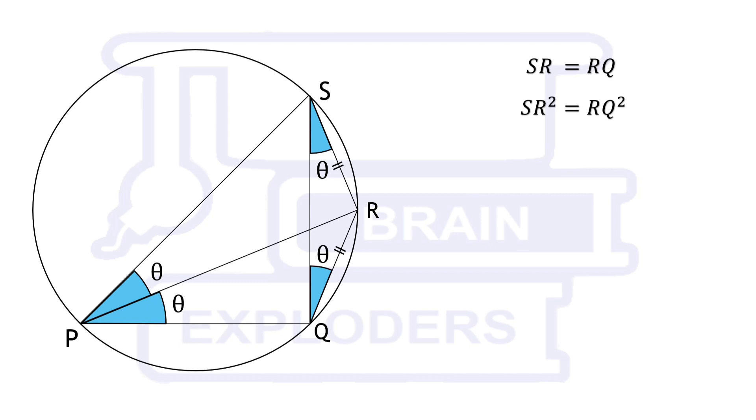It implies that SR squared is also equal to RQ squared. If SP is equal to b, PQ is equal to c, and PR is equal to a, then SR squared can be written as b squared plus a squared minus 2ab cos theta. And RQ squared can be written as a squared plus c squared minus 2ac cos theta.